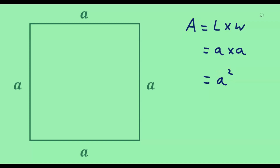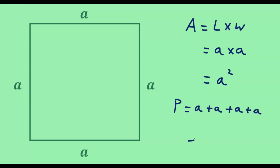Next, let us consider the perimeter of the square. The perimeter is simply the length of the boundary, and we can obtain that by adding the lengths of all of the sides — this side, and this, and this, and this. So we have A plus A plus A plus A, which is simply equal to 4A. And so we can see that the perimeter of a square is equal to 4A, and the formulas work.